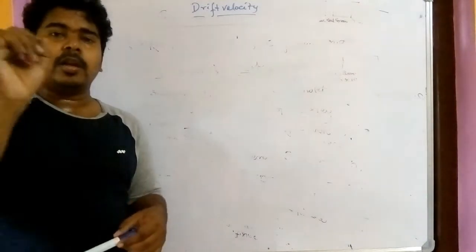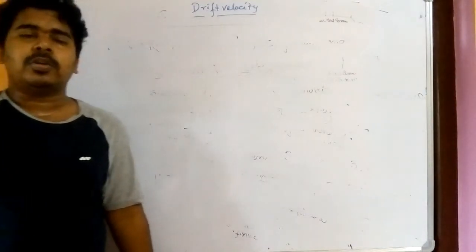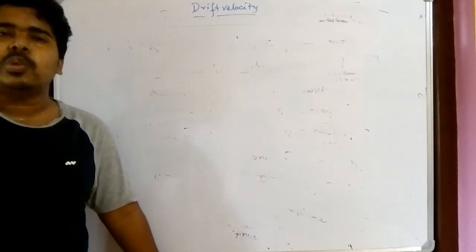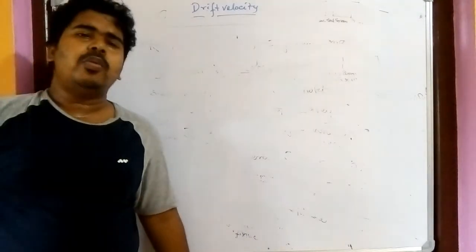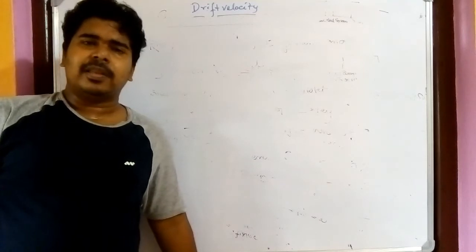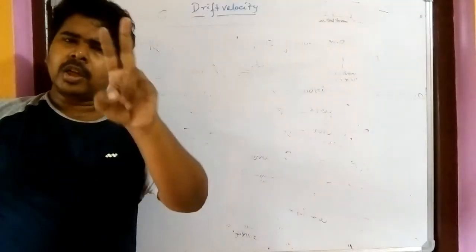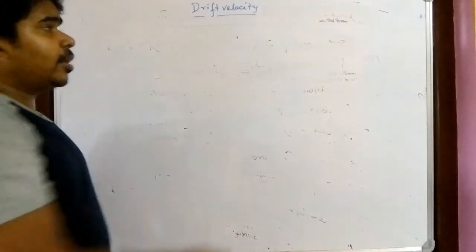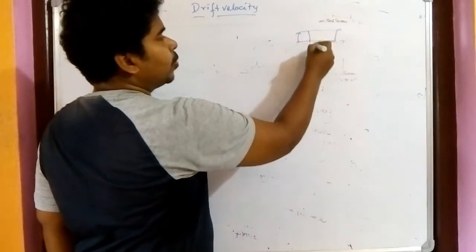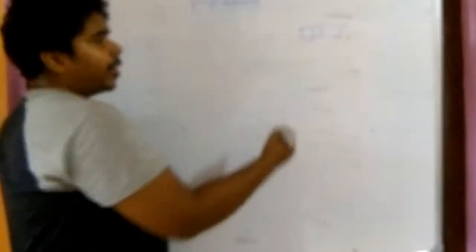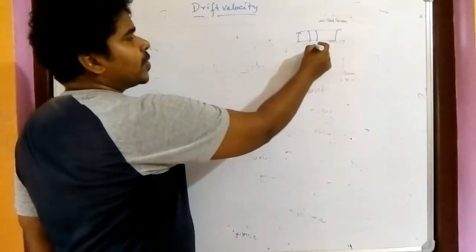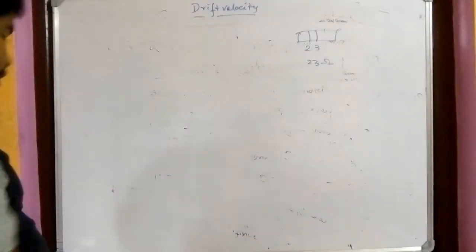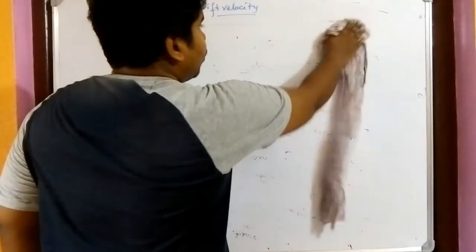Before moving to drift velocity: some carbon resistors have only two color bands. In that case, there are only two significant figures and no power of 10. For example, Red (2) and Orange (3) gives 23 Ω directly.